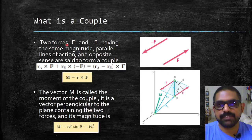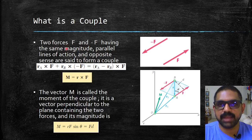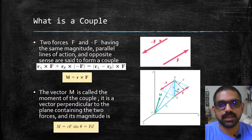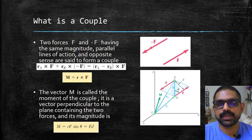If there are two forces F and minus F having the same magnitude, parallel lines of action, and opposite sense, then they are said to form a couple. Here you find this is a force F and there is a force minus F. This minus sign represents the change in the direction. The magnitudes are the same, their lines of action are parallel to each other.